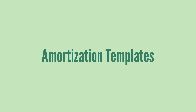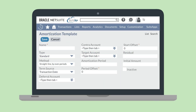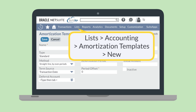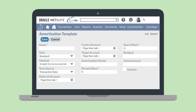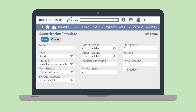First, you'll need amortization templates. Each amortization template you create will define the terms for deferring expenses, and you can create as many as you need. To create an amortization template, navigate to Lists, Accounting, Amortization Templates, New. When creating the template, you'll determine things like the number of periods over which the amount will be amortized, the deferral account that will be used, and how much of the expense will be recognized in the initial period.